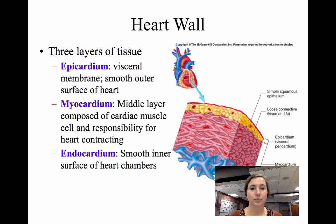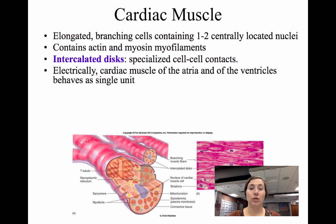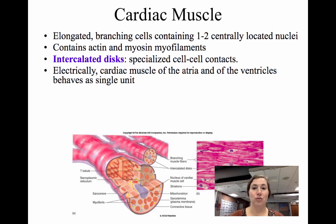Cardiac muscle cells are elongated, branching, cylindrical cells that can have one to two nuclei. They contain actin and myosin myofilaments and are striated. A special feature is the intercalated disc, which allows cell-to-cell contact so the muscle contracts as a whole. Electrically, the cardiac muscle of the atria and ventricles each behave as a single unit — the two atria pump together and the two ventricles pump together.